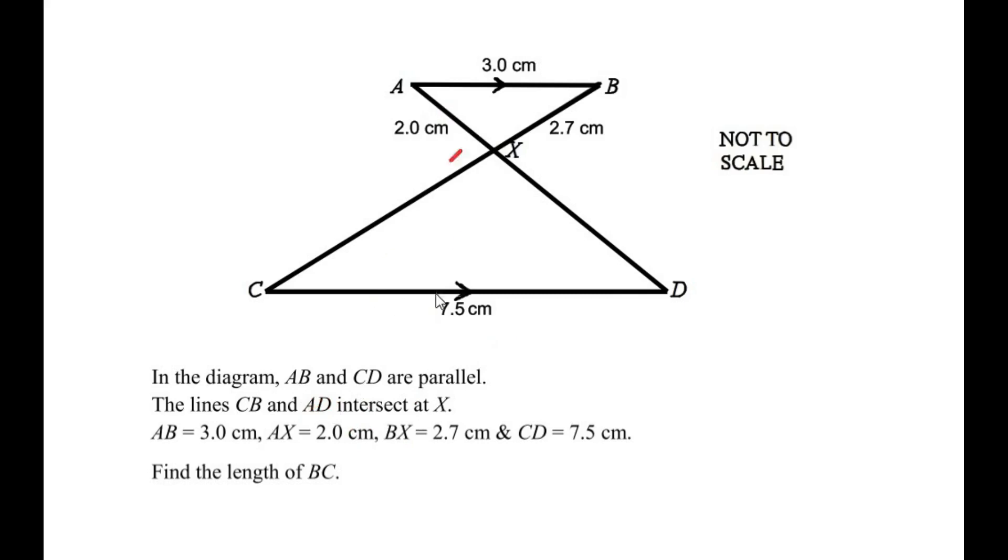Since it is given that lines AB and CD are parallel to each other, the line BC acts as a transversal line which cuts the two parallel lines at point B and point C. So we can write that angle ABX is equal to angle XCD because of the alternating angles of the two parallel lines.